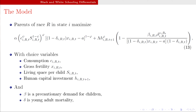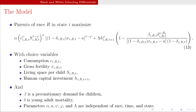The model has other parameters — alpha, psi, lambda, phi — and these are all independent of race, time, and state, hence no subscripts on them. They are exogenous parameters determined outside the system.